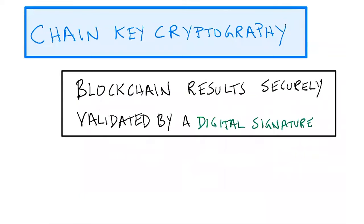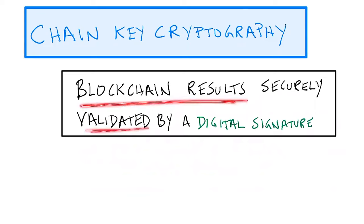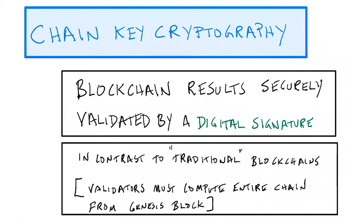Let me talk a little bit about what Chain Key Cryptography is at a super high level. Chain Key Cryptography is really one of the technical innovations that really differentiates the Internet Computer from other blockchains. It does this by allowing blockchain results on the Internet Computer to be securely validated by simply validating a small, compact digital signature.